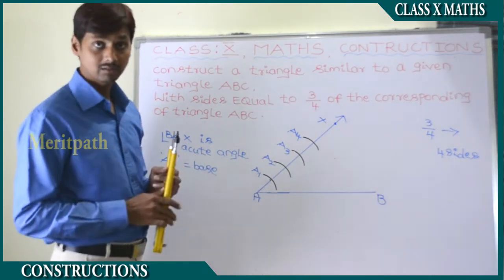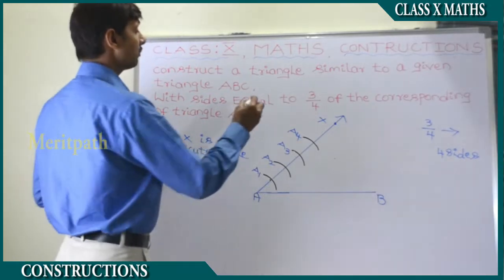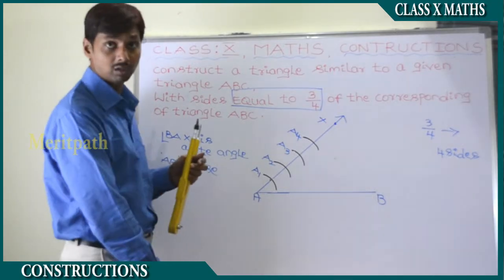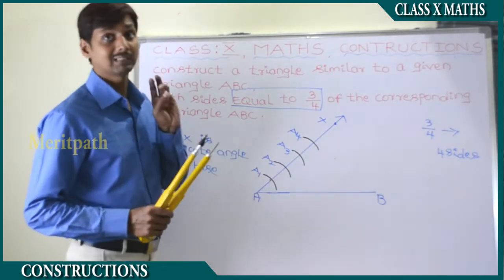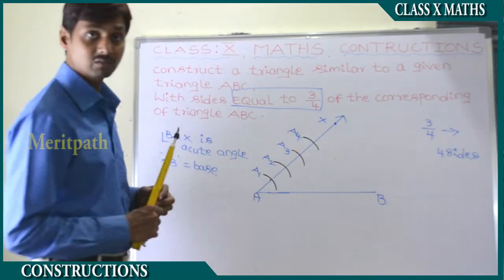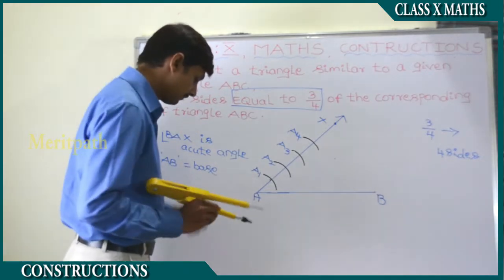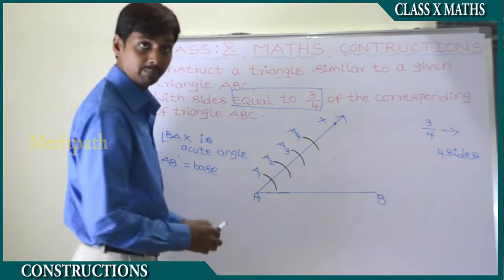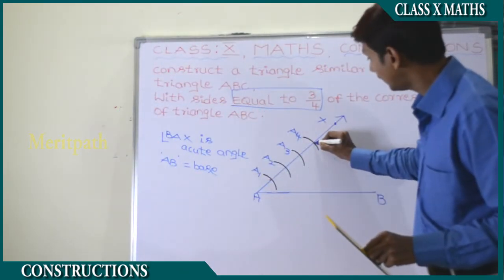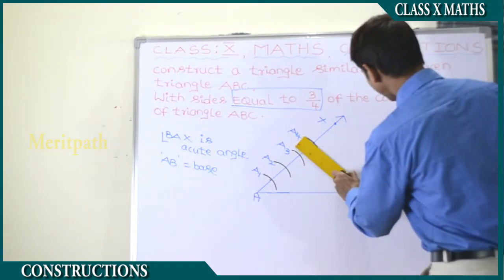So X is the ray. We have divided it. It's given that three by four parts — three by four equal parts we need to make. So total parts are four. Among these, we need to take three parts. It should be divided from point of four. So let's take this four parts and join with B. Let's join A4 and B. A4 is the point here, and we are joining with B. So A4 and B is joined together — the line segment.